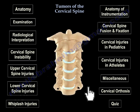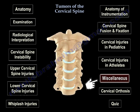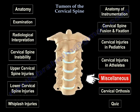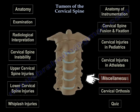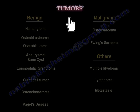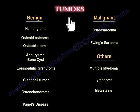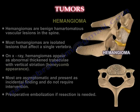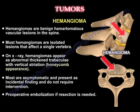Tumors of the Cervical Spine. Benign Tumors: Hemangioma. You will find vertical striation on the X-ray or honeycomb appearance.